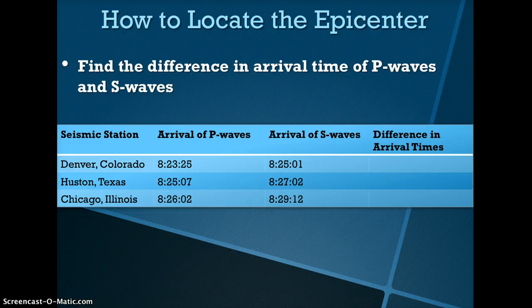Sometimes the individual arrival times of P waves and S waves may be given to you. In this data table, the arrival time of P waves and S waves was given. In order to find the difference in arrival times, you would subtract the arrival time of the P wave from the arrival time of the S wave. For example, for Denver, Colorado, you would subtract 8:25:01 minus 8:23:25.